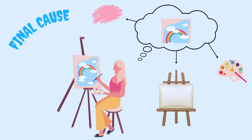An artist uses a specific canvas, color palette, and artistic technique to paint a particular image. The material, formal, and efficient causes are all executed with an eye toward what the final cause is, or the end that is sought after. Thus, the final cause is also called the first cause, because although it is the last in the order of execution, it is the first in the order of intention. Although the painting is completed only after the other three causes have done their part, the other three causes could not begin to do their part unless they know to what end they are aiming for.